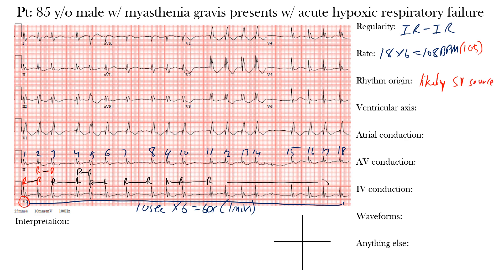When we look at the ventricular or QRS axis, you should have gotten a normal QRS axis. The actual axis here was positive 47 degrees, which is within normal limits — a normal axis. To find the axis, we reference zero degrees, positive 90 degrees, plus or minus 180 degrees, and negative 90 degrees.